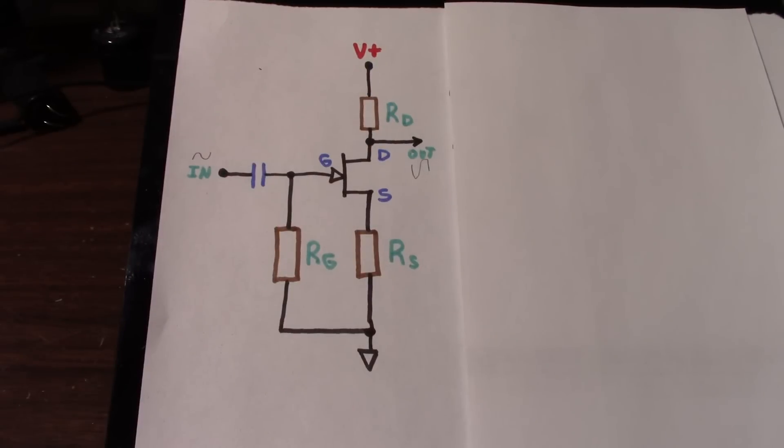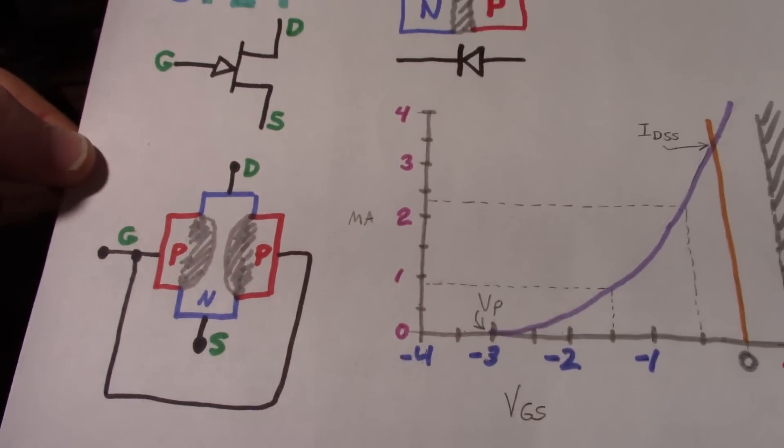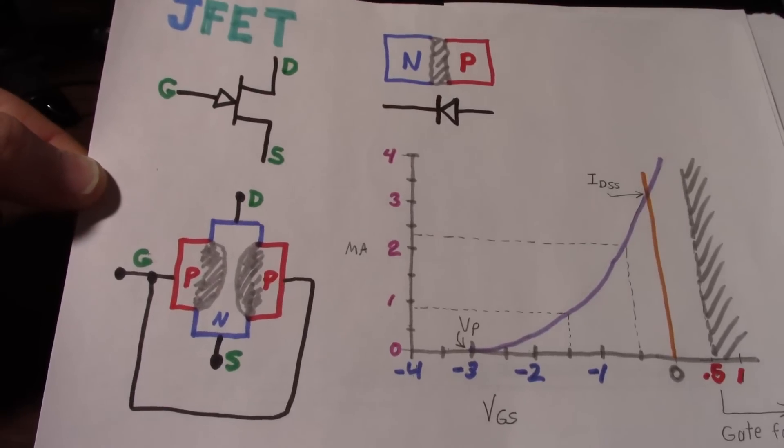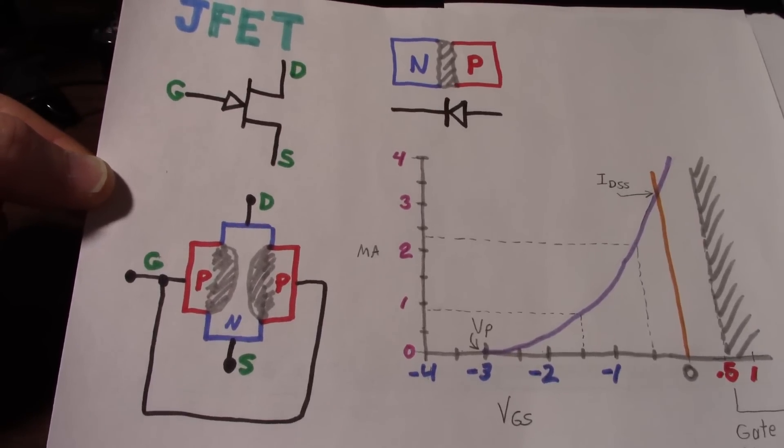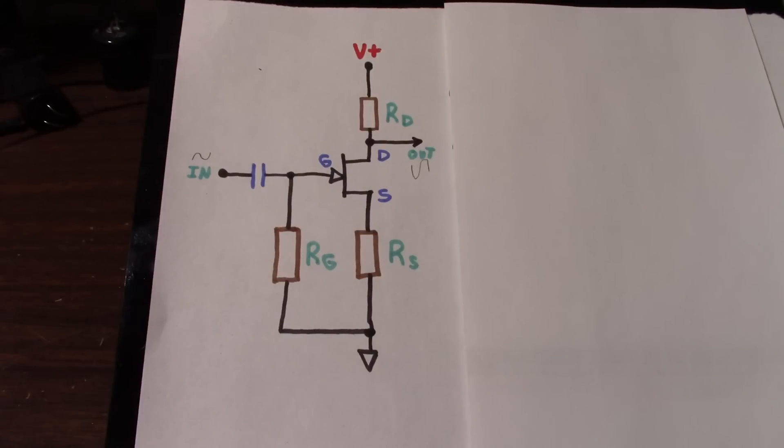Greetings everyone and welcome back to the bench. This video is part two of the JFET, the Junction Field Effect Transistor. In the first part we talked about the characteristics of the JFET, how it works. If you recall the diagrams I had here, we'll certainly revisit this again. In part two we're going to take a look at actually making a usable amplifier, a little preamp circuit.